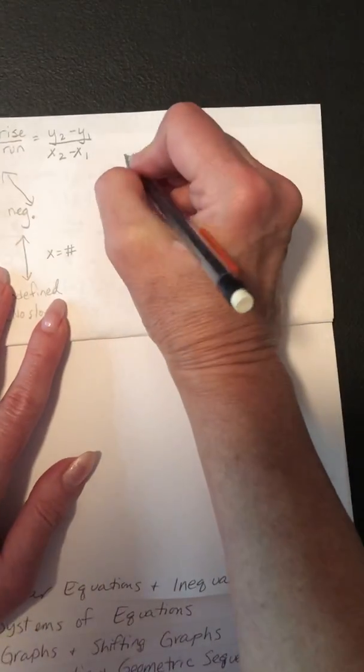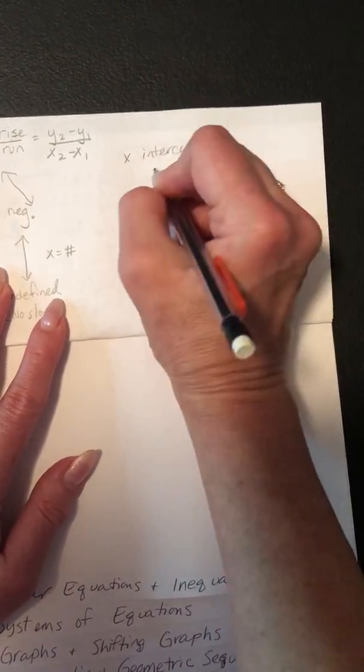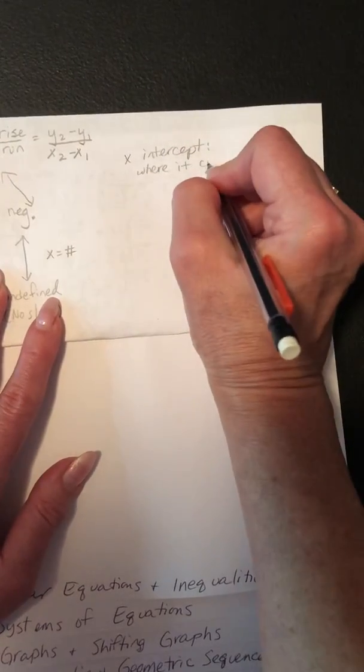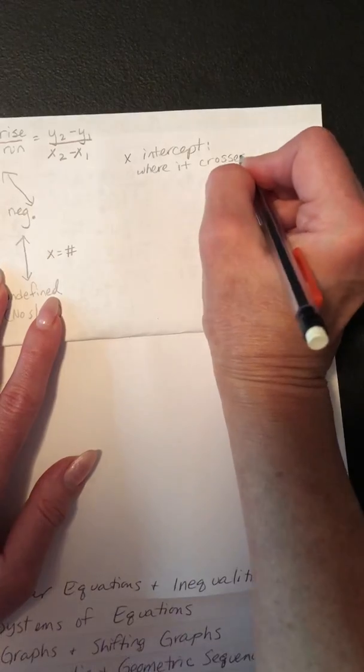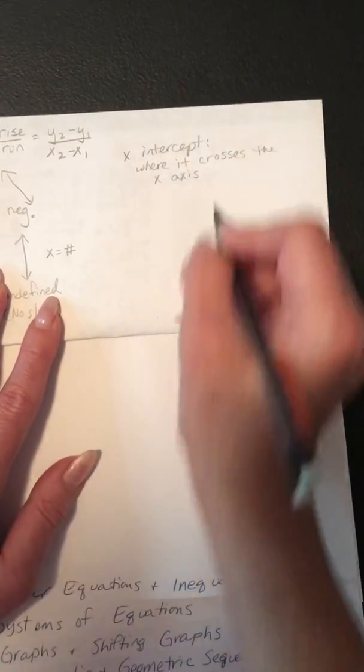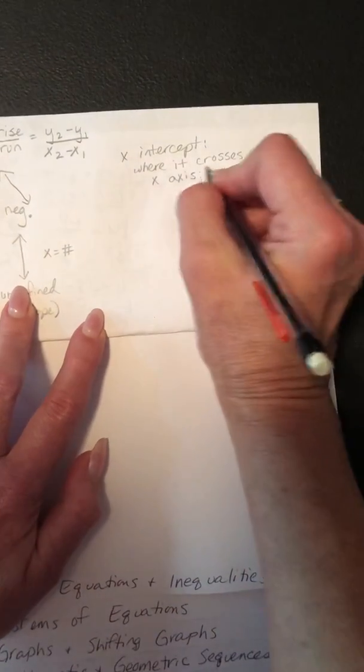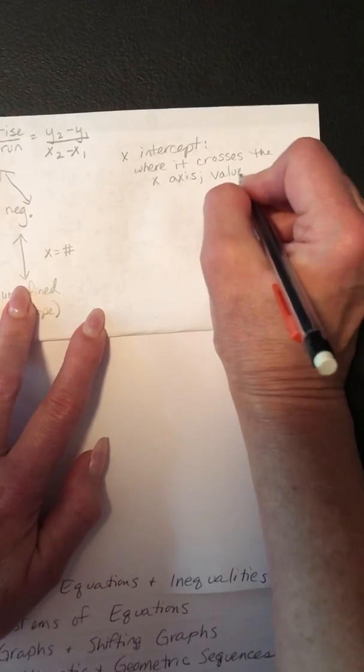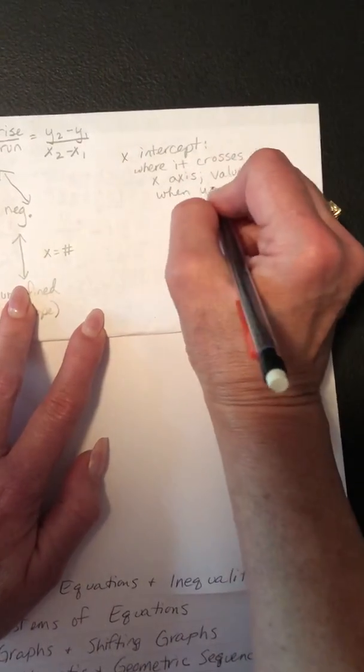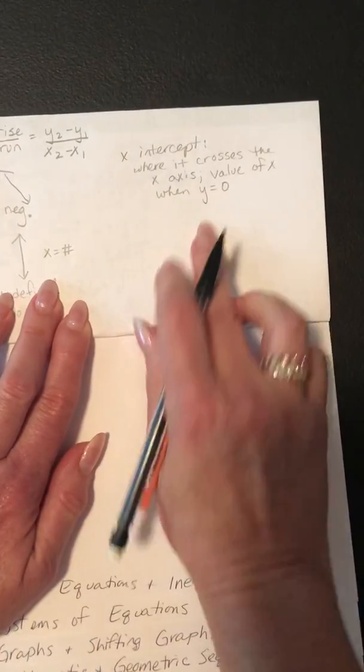So the x-intercept is where it crosses the x-axis. And obviously, if I write faster than you, you can always pause. But I like as a better definition, it's the value of x when y equals zero. I like that as a better definition because it tells you what to do.